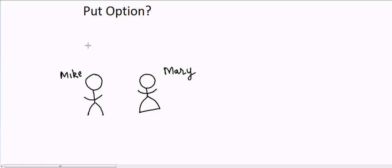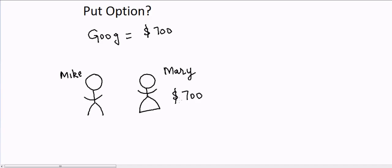Let's talk about put options. Suppose I'm looking at Google and Google is right now at $700. Mary already owns Google and she is expecting Google to go high, thinking that will be a good return on her investment. But she's also worried — what if Google goes down? It can go to $680 or $650, and she doesn't want to lose that money. So she is looking for some kind of protection.